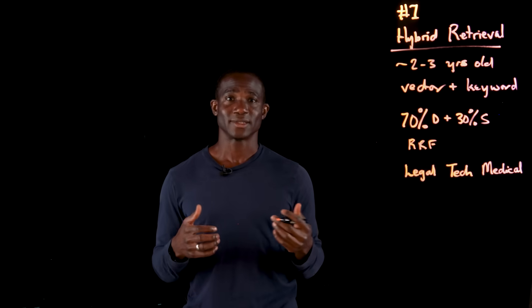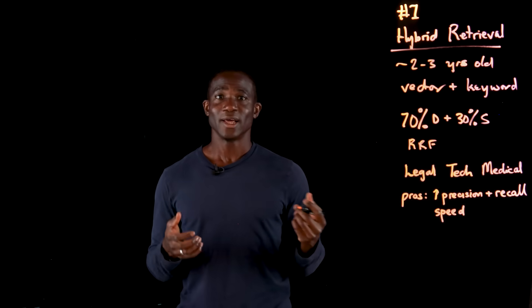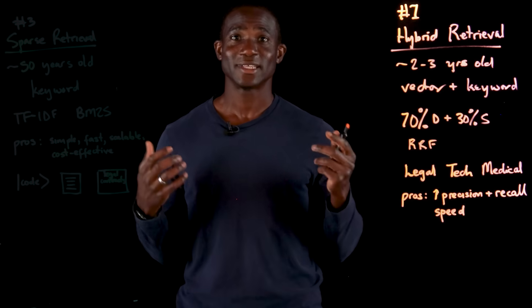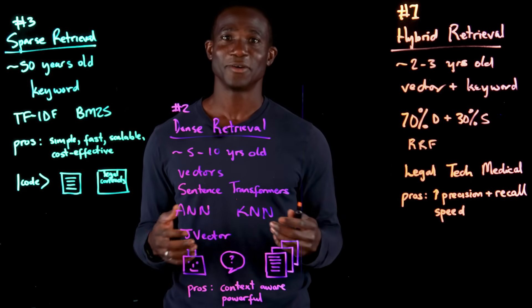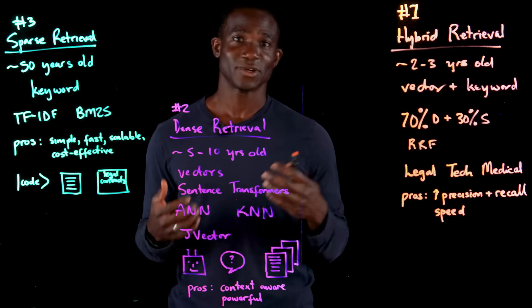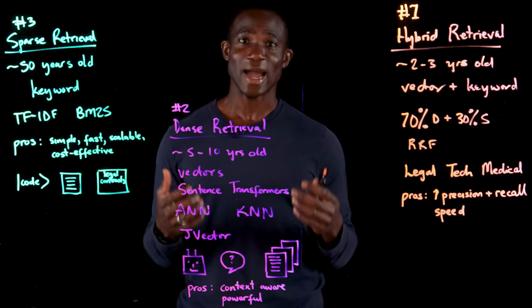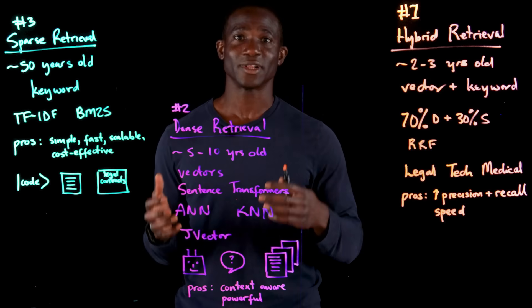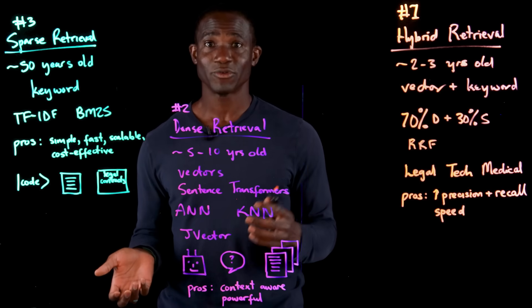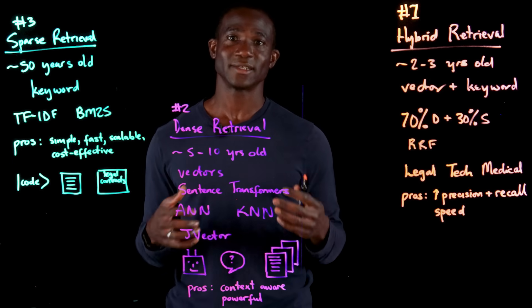Hybrid is number one because it balances speed, precision, and recall — that's why it has become the default choice for serious RAG deployments, and also why offerings like Elasticsearch, Milvus, Weaviate, and DataStax AstraDB have all made it easy to experiment with hybrid retrieval. If you're a data scientist or developer, embrace the hybrid retrieval era: sparse retrieval is fast and exact, dense retrieval is context-aware and flexible, but hybrid retrieval gives you the best of both worlds. And that is why it's top of the list.